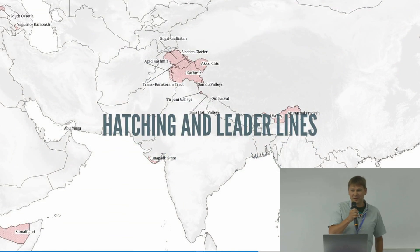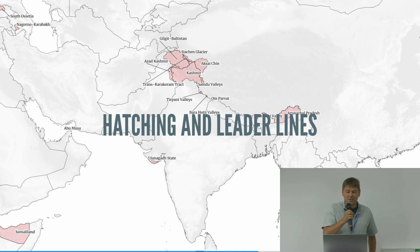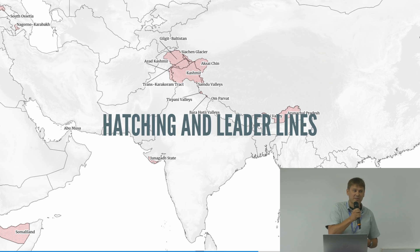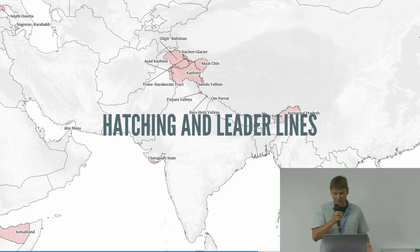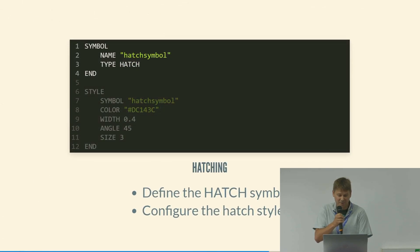MapServer has been around for a while so lots of cartographic options have built up over the years. This example shows hatching — that's the red diagonal effect on areas of conflict. Leader lines are used when you don't have space to put all your labels in one place — you have a line pointing to the feature you want to label, so you can get more labels on your map. This functionality has been around for a while, but it's worth pointing out that it still exists.